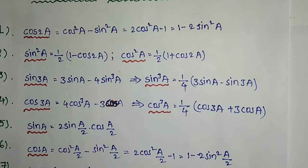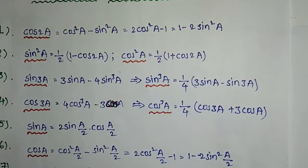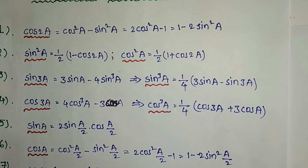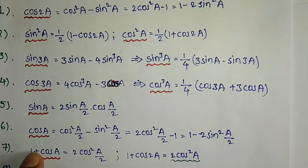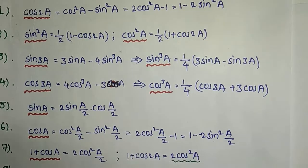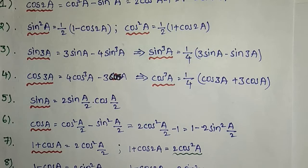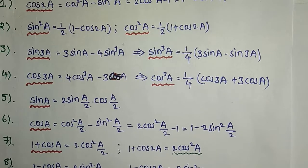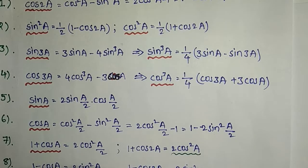1 plus cos2A equals 2cos²A. Here, 2A divided by 2 is A by 2, so 1 plus cosA equals 2cos²(A/2). Similarly, 1 minus cosA equals 2sin²(A/2).